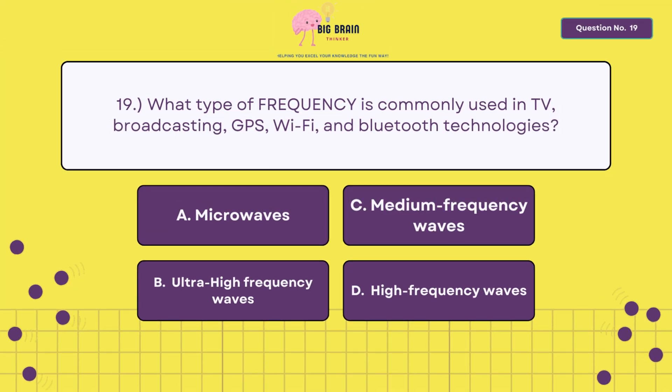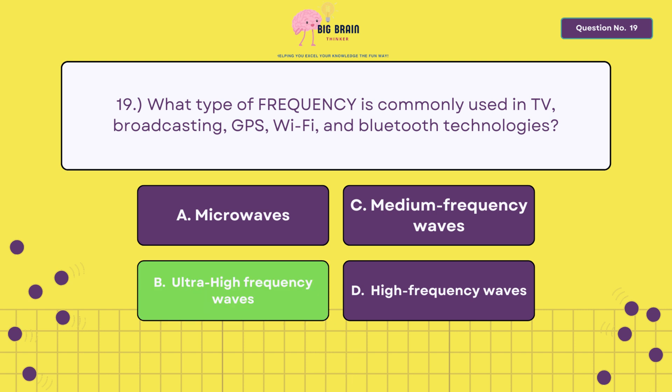Nineteen, what type of frequency is commonly used in TV broadcasting, GPS, Wi-Fi, and Bluetooth technologies? The answer is letter B, ultra high frequency waves.